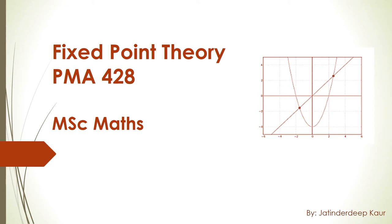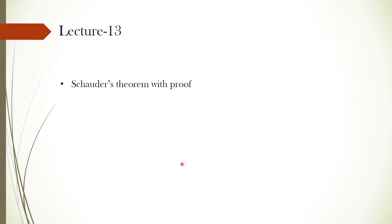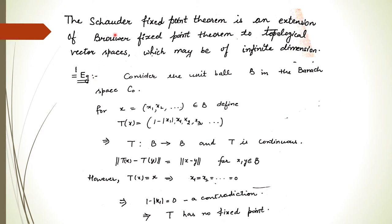Hello everyone. Today I am going to explain Schauder's theorem with proof. This is lecture 13 on fixed point theory. The Schauder fixed point theorem is an extension of Brouwer's fixed point theorem to topological vector spaces which may be of infinite dimension. We can see this easily with the help of an example.